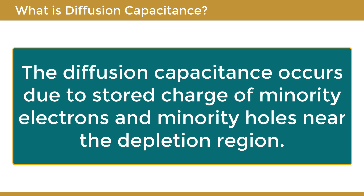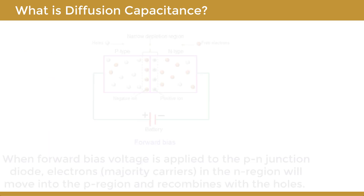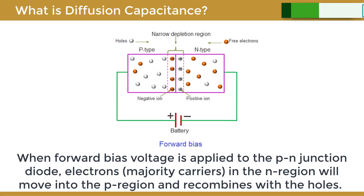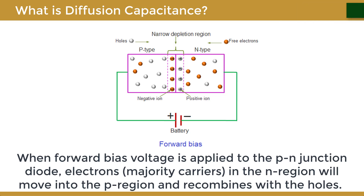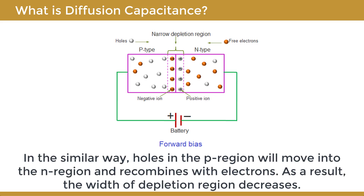The diffusion capacitance occurs due to the stored charge of minority electrons and minority holes near the depletion region. When forward biased voltage is applied to the PN junction diode, electrons — the majority carriers in the N region — will move into the P region and recombine with the holes. Similarly, holes in the P region will move into the N region and recombine with electrons. As a result, the width of the depletion region decreases.